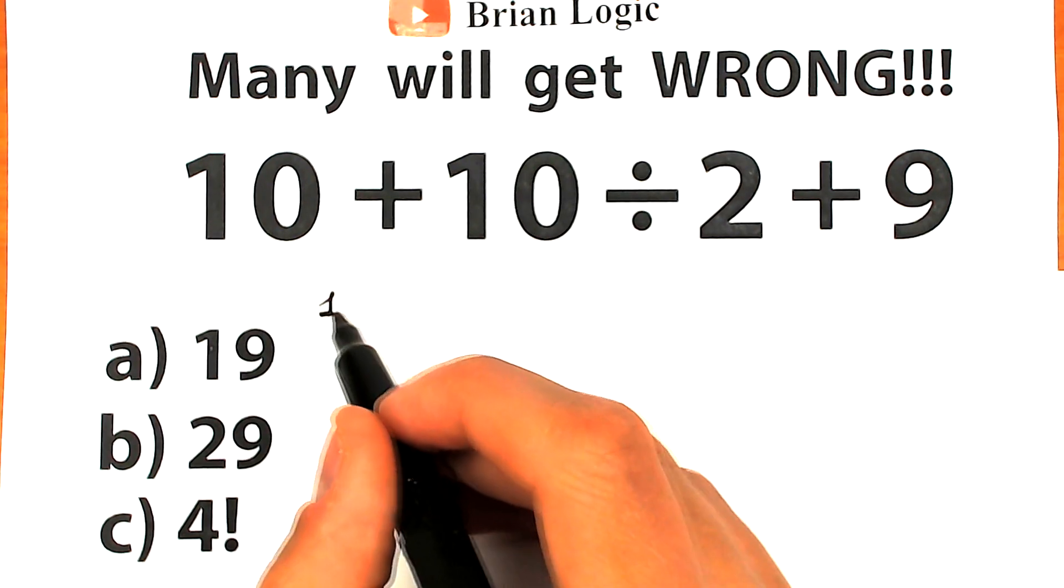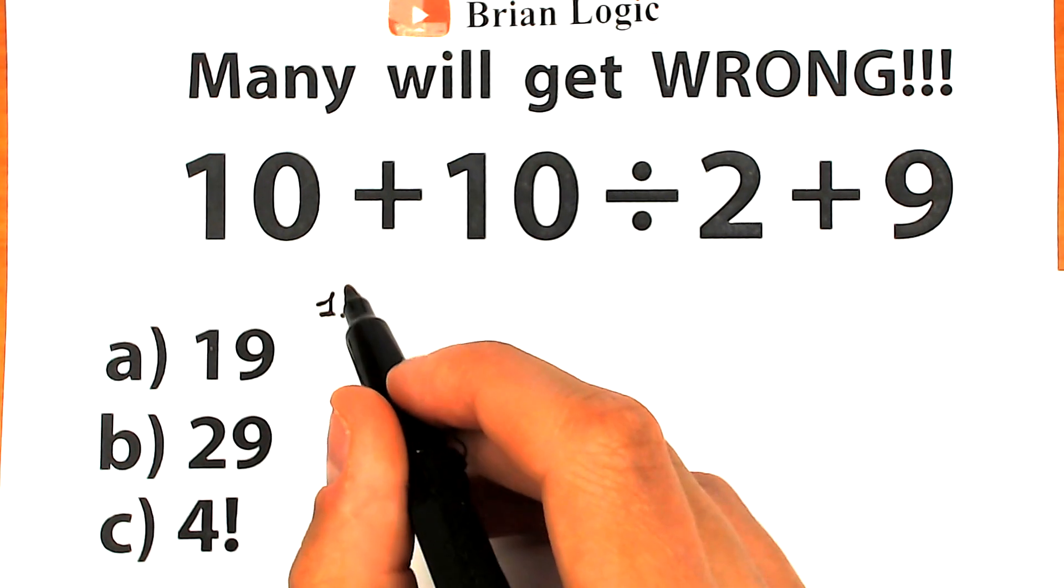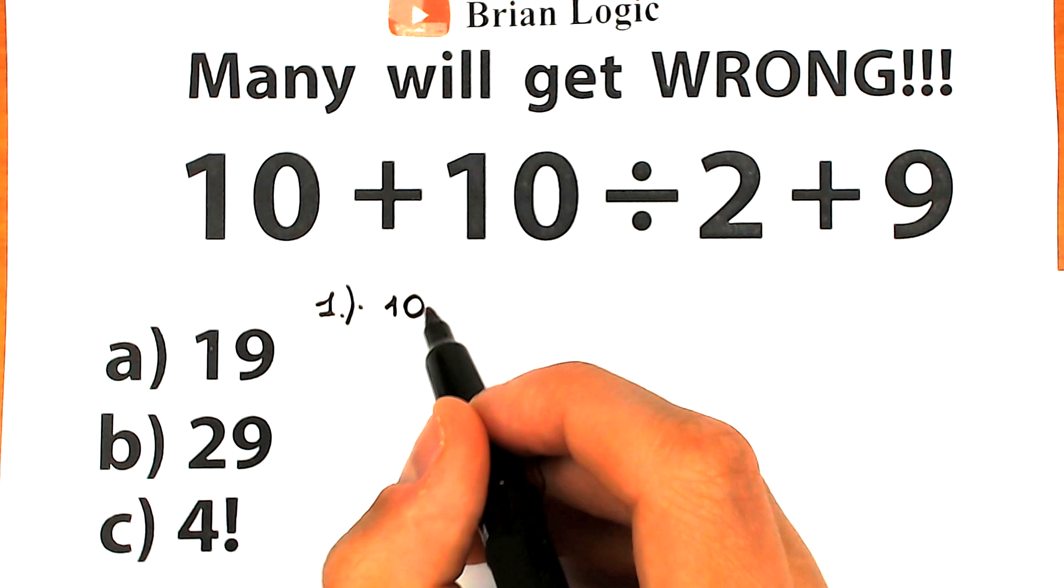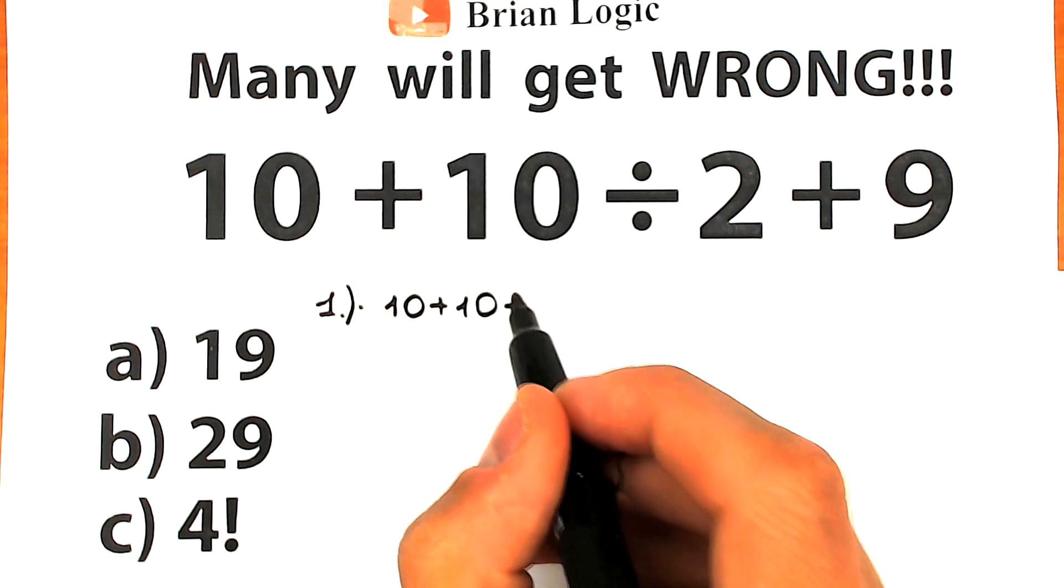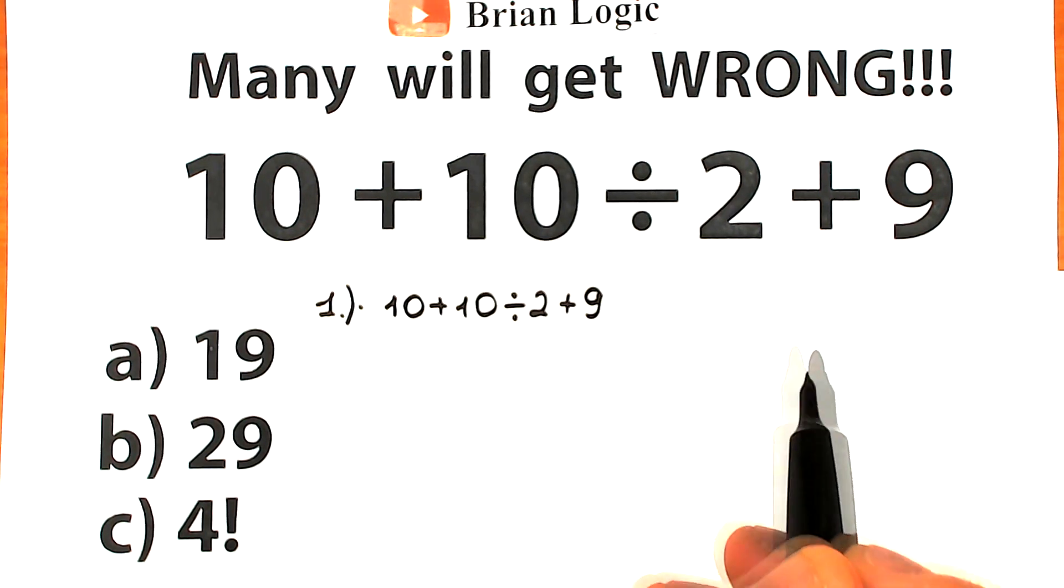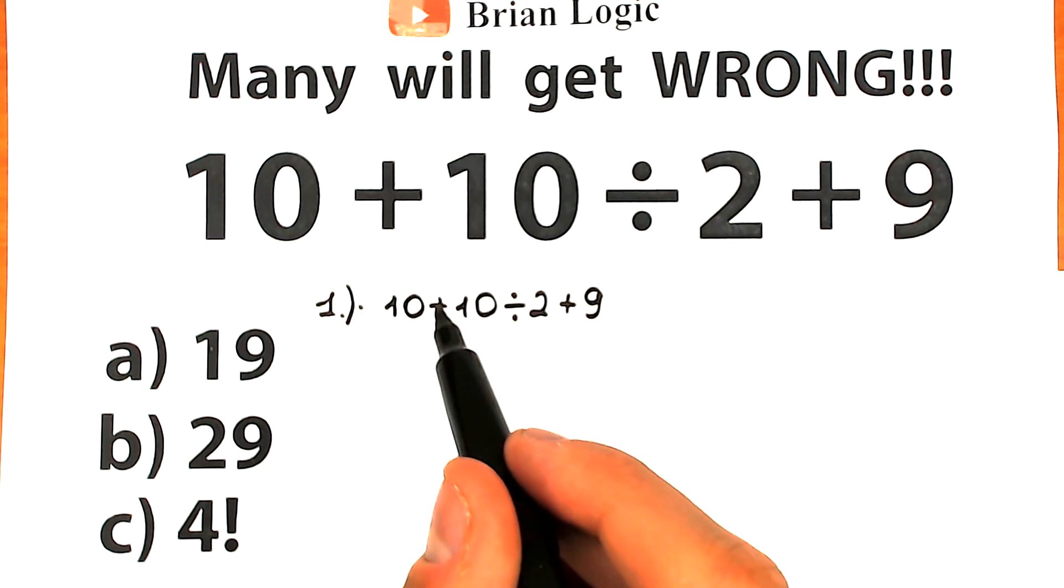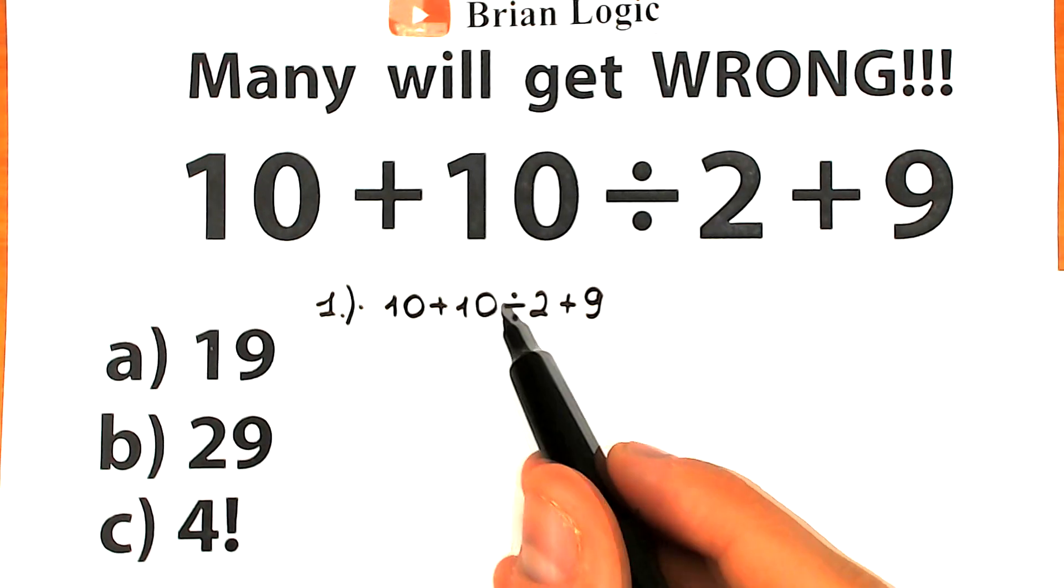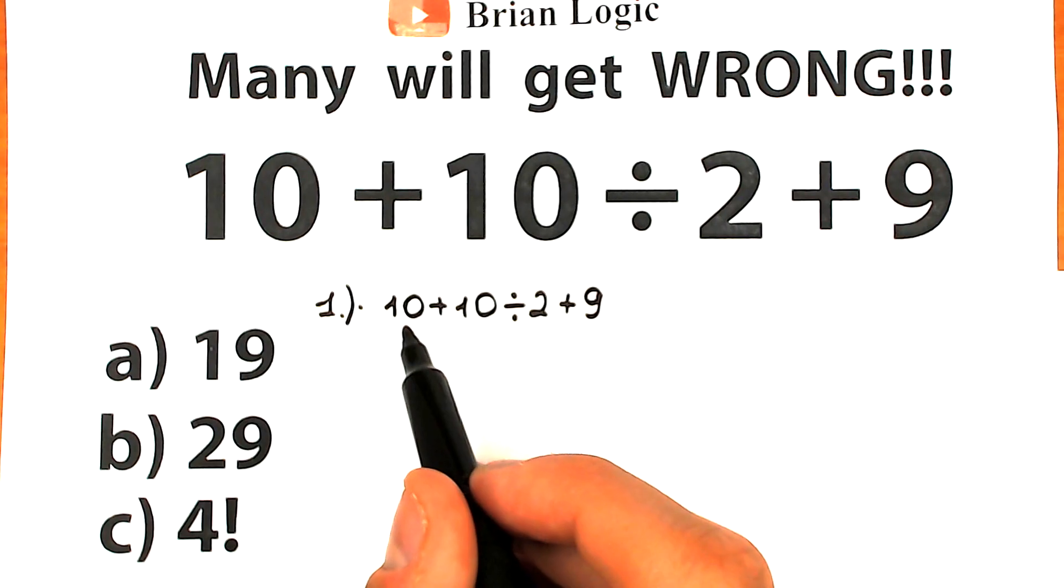Okay, first of all, let's rewrite our challenge right here. So we have 10 plus 10 divided by 2 and plus 9. Here's our challenge. And a lot of students solve this question like that from left to right. They don't care about order of operation. They solve this question like that.